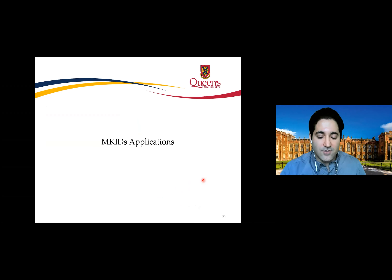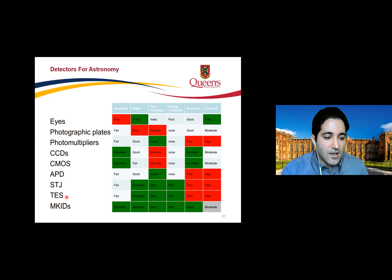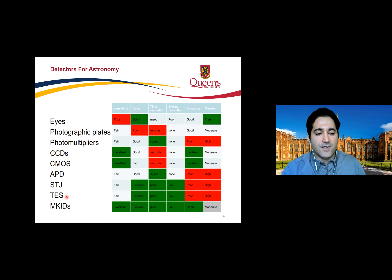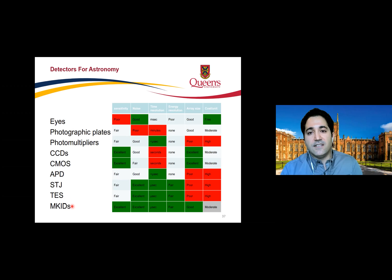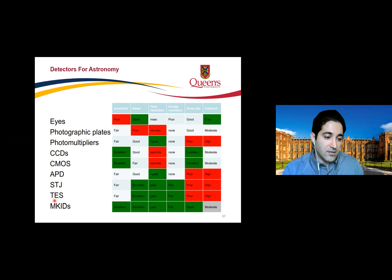Looking at MKID applications: the first application was in astronomy. Before MKIDs, we used TES bolometers and transition-edge sensors. For example, the SPICA telescope project, aiming to launch around 2030, originally found MKIDs were not good candidates, but has since changed its decision — MKIDs are now considered better than TES. TES NEP is around 10^−19 W/√Hz, while MKIDs have recently achieved 10^−20 W/√Hz with higher energy resolution.